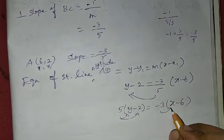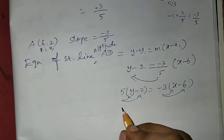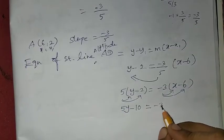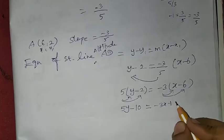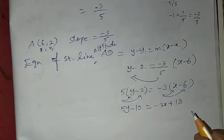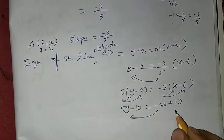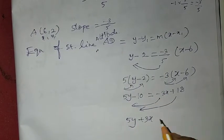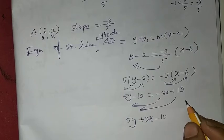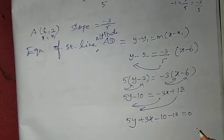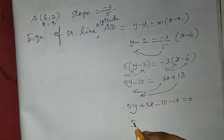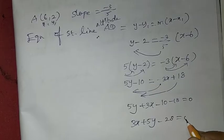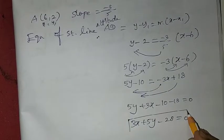Multiplying out: 5y minus 10 equals minus 3x plus 18. Rearranging: 5y minus 3x minus 10 plus 18 equals 0, which simplifies to 3x minus 5y minus 28 equals 0, giving minus 10 minus 18 equals minus 28.